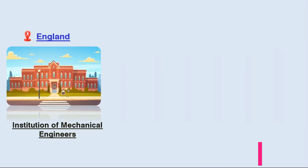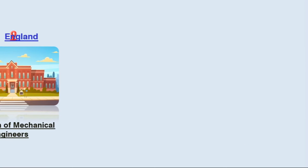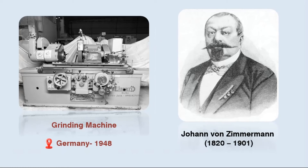The first British Professional Society of Mechanical Engineers was formed in 1847 — the Institution of Mechanical Engineers. On the European continent, Johann von Zimmermann, 1820 to 1901, founded the first factory for grinding machines in Chemnitz, Germany in 1848.